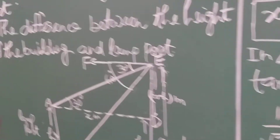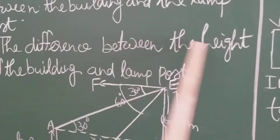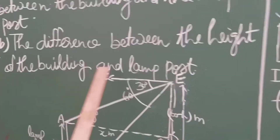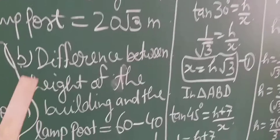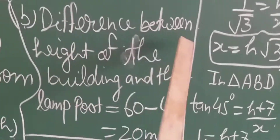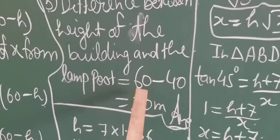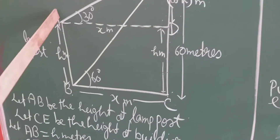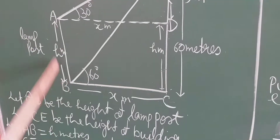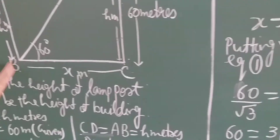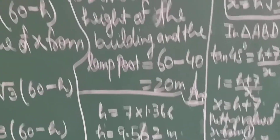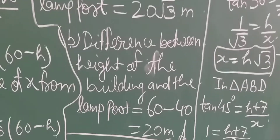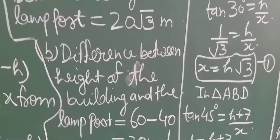Now in the second part, we have to find the difference between the height of the building and the lamppost. Difference equals 60 minus 40, because the height of the building is 60 meter and the height of the lamppost is 40 meter. So 60 minus 40 equals 20 meter.